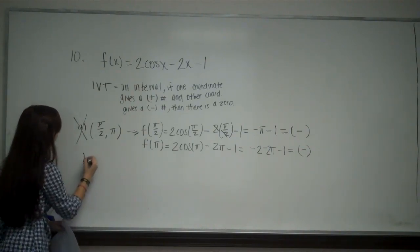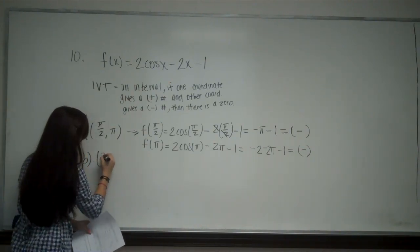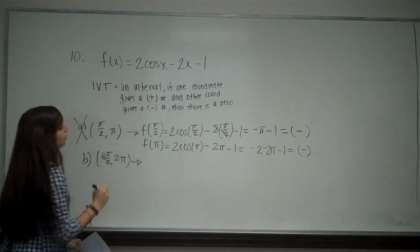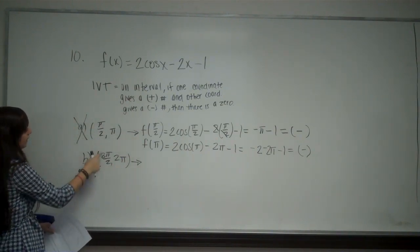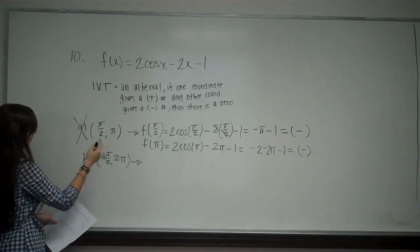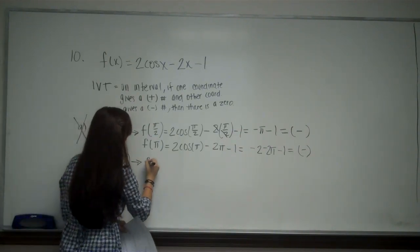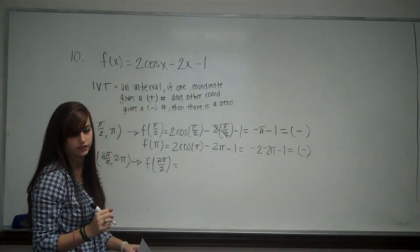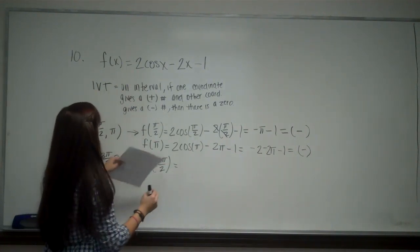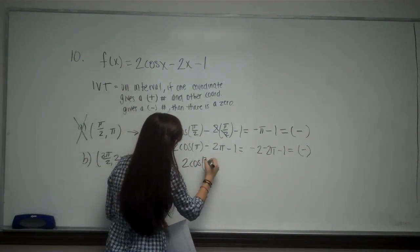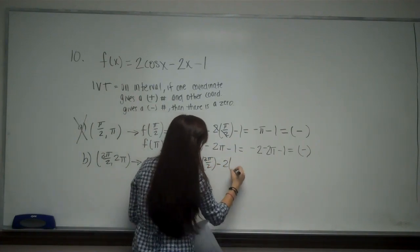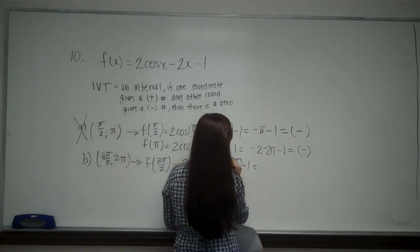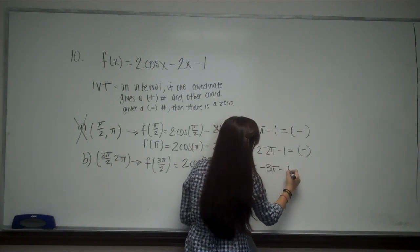So from there we can try B. And B is from 3π/2 to 2π. Which we know is going to be the same because the values of cosine of these values are the same. So f(3π/2) is going to be 2cos(3π/2) - 2(3π/2) - 1. Cosine of 3π/2 is 0, so 2 cancels here. I got -3π - 1 and that is going to be a negative.